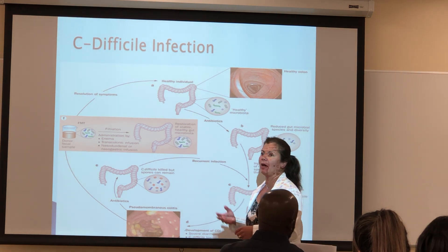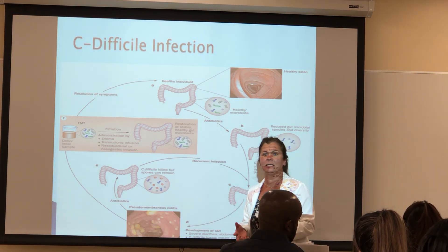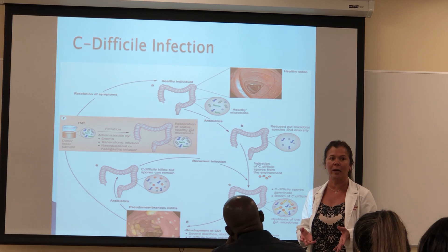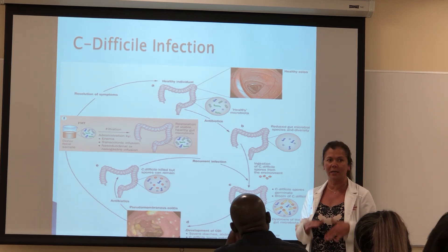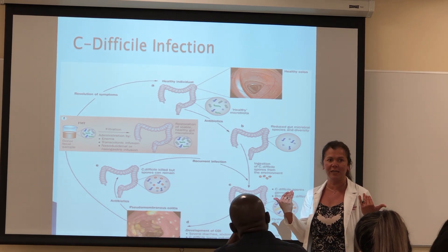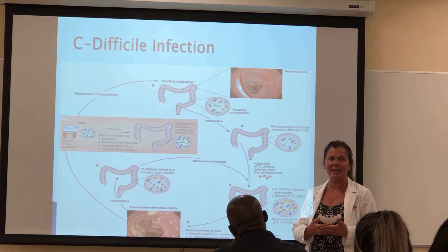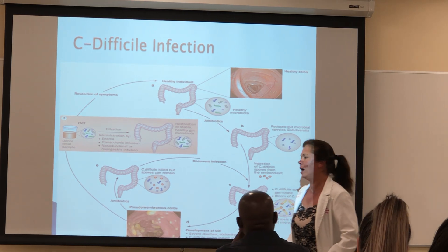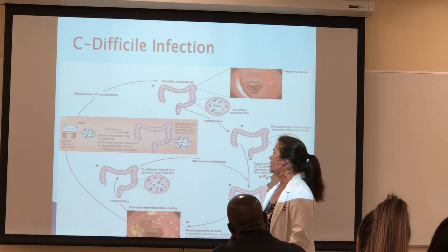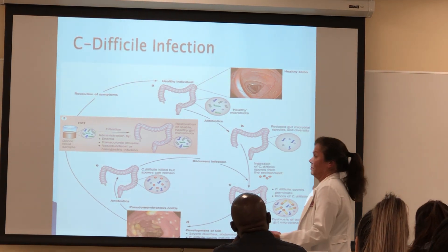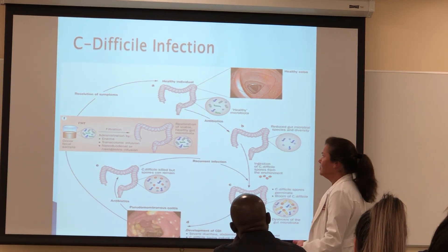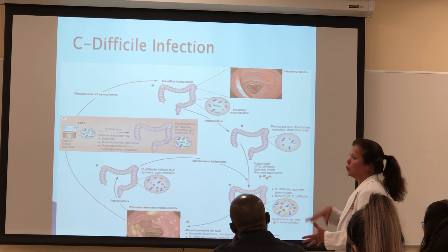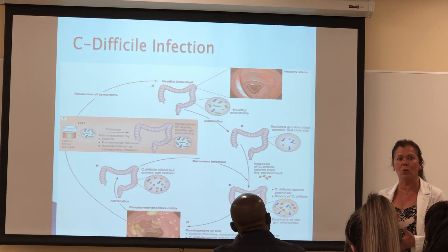Having antibiotics — what does it do to the intestinal flora? It kills them. Basically, that intestine becomes aseptic, and of course opportunistic infections attack.